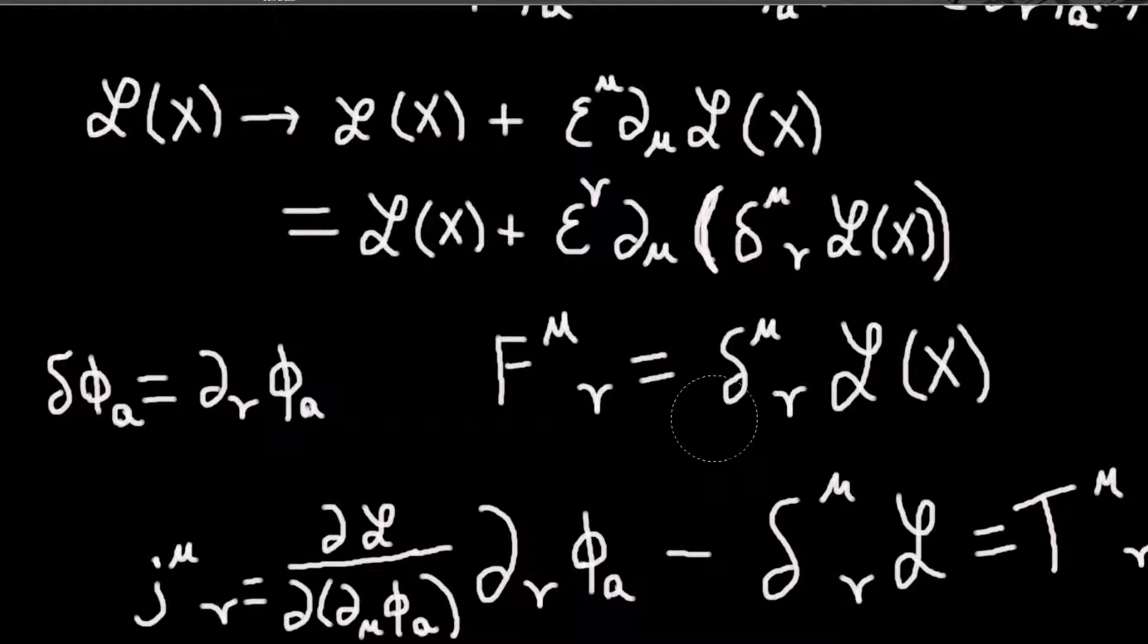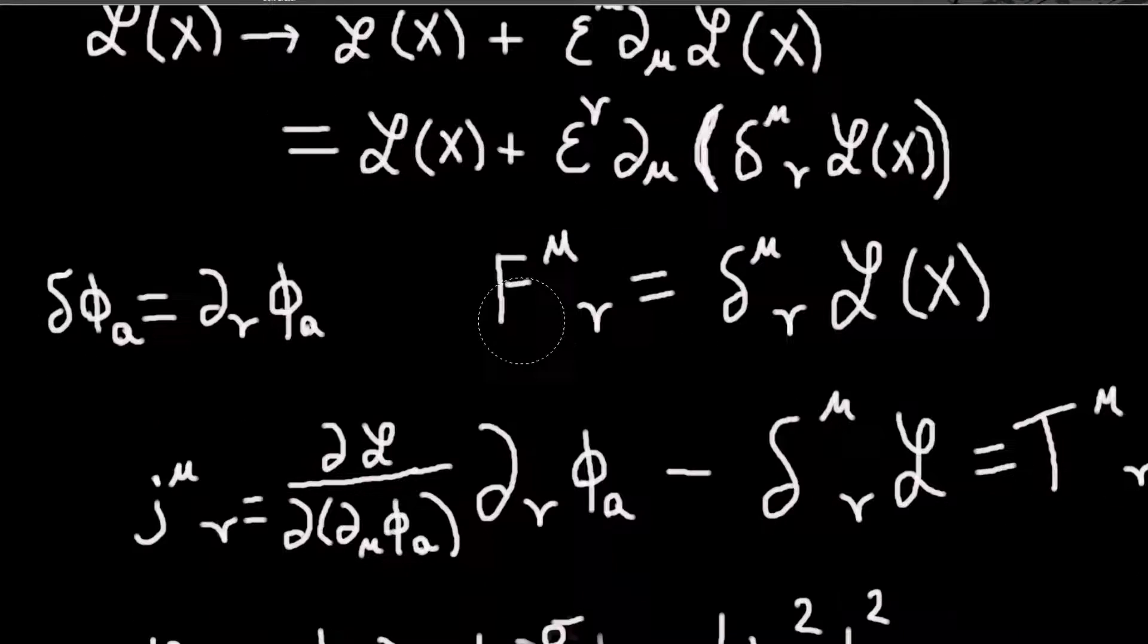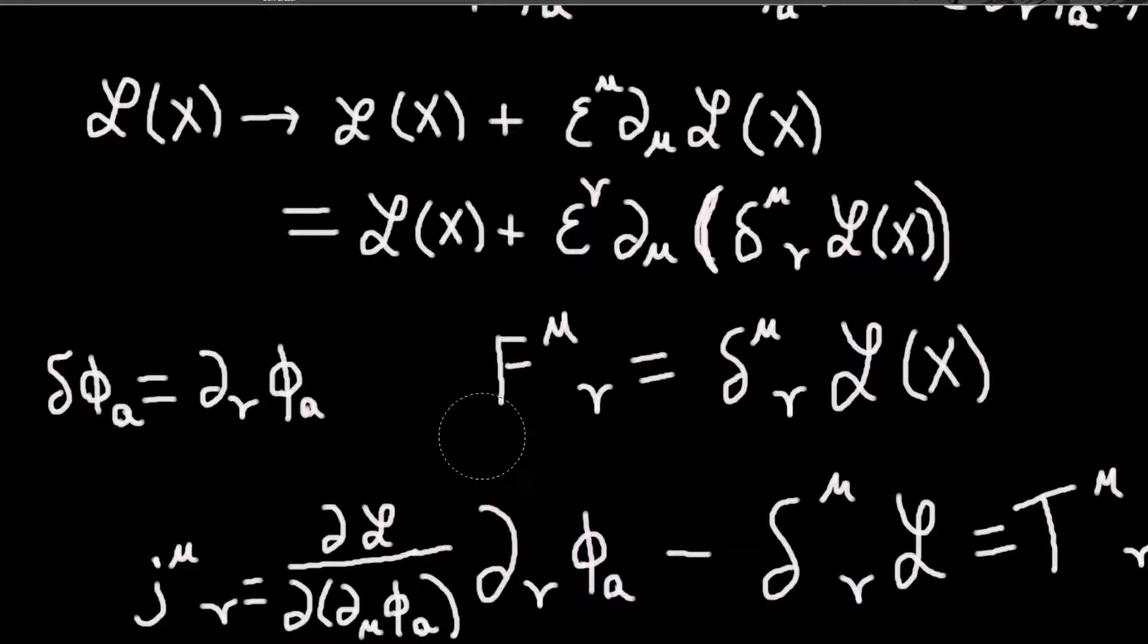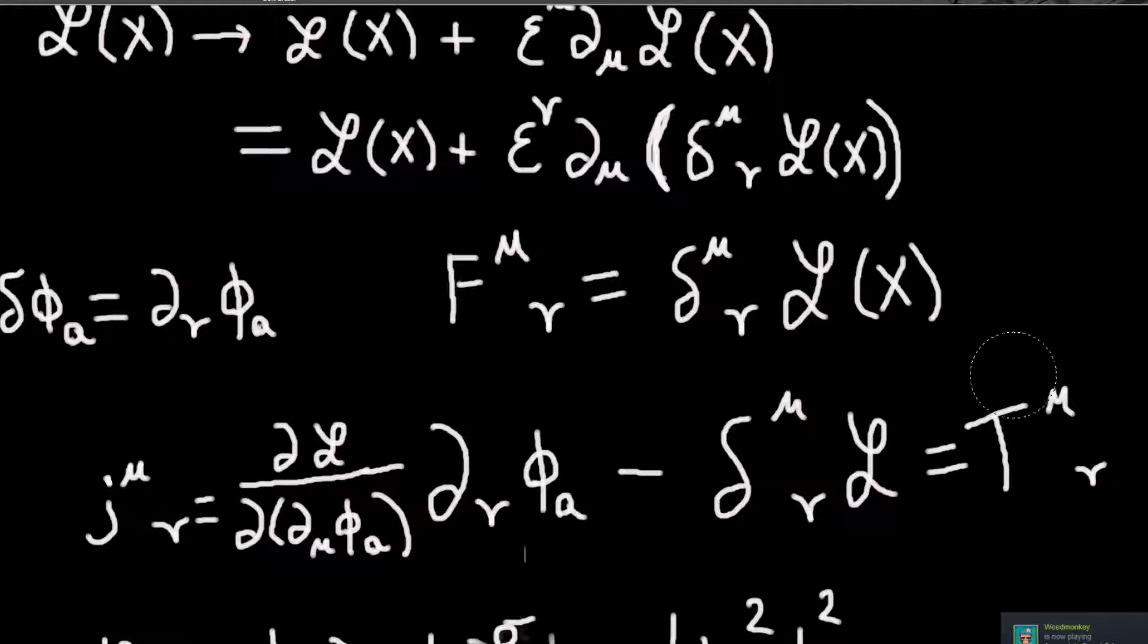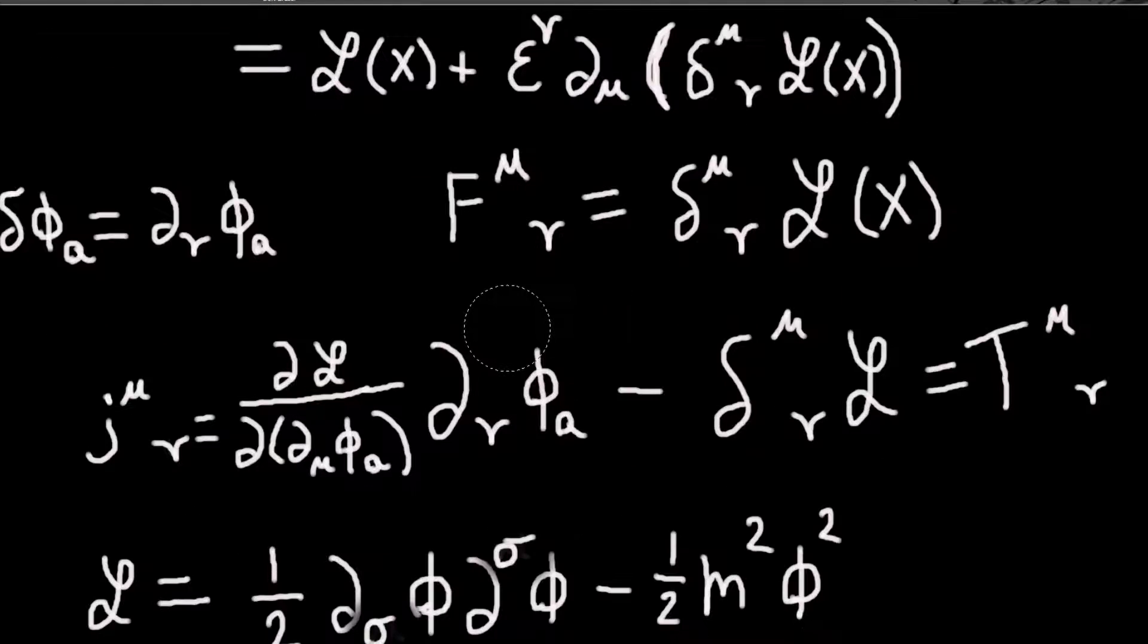And now, so now that we have those, we can write down our current. So our current will just be, yeah, this. So we just plugged in this here and this here. And this is called, this will be known as the energy momentum tensor, T nu mu.